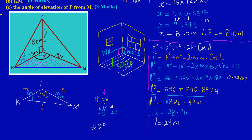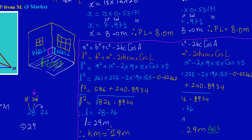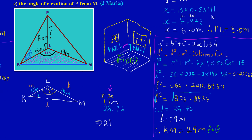They didn't ask us to find l, so we state: therefore KM = 29 meters. That's the value of KM. In the next video we'll be looking at the solution to question 10b part C, where we'll find the angle of elevation of point P from point M. Stay tuned — bye bye!